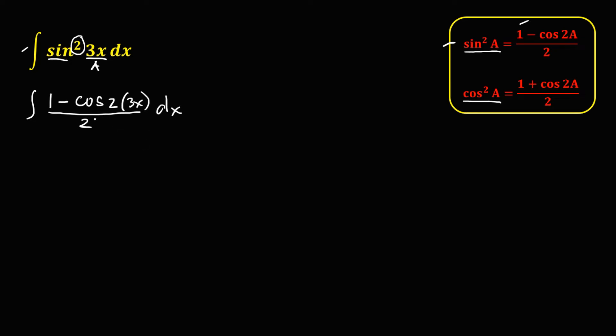Then to simplify, we need to put this denominator to outside. So this becomes 1 half, then the integral of 1 minus cosine 2 times 3x. This one is 6x, then dx.